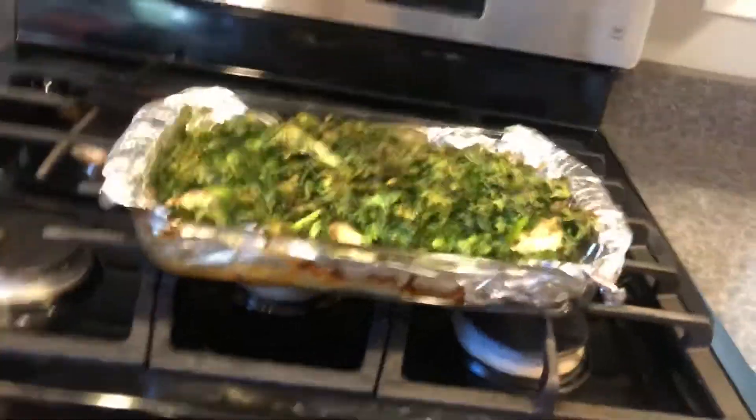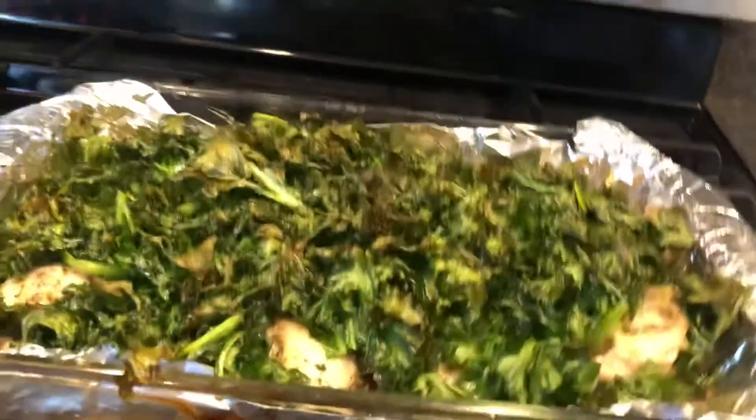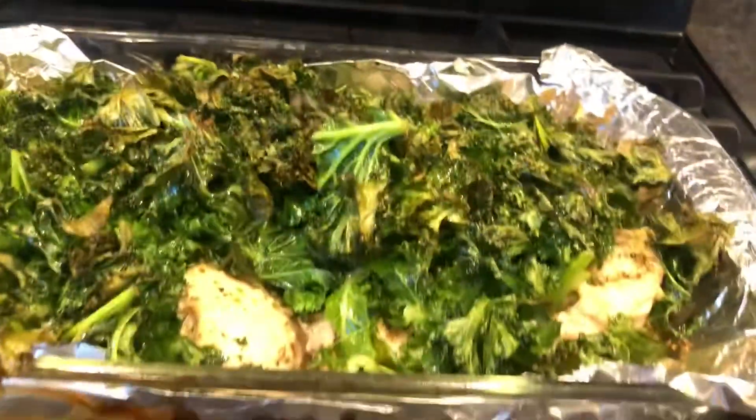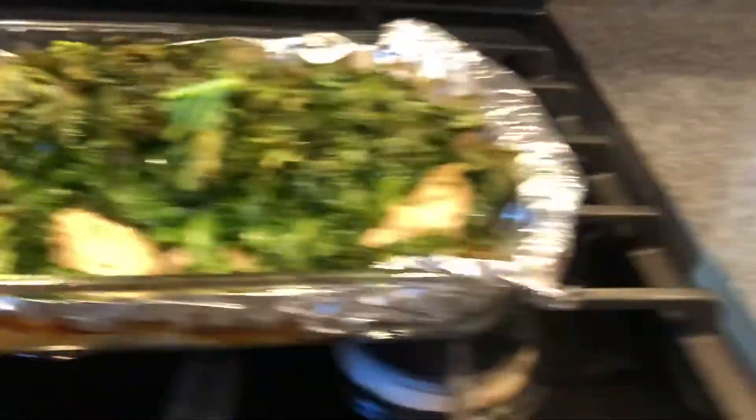Alright, dinner's out of the oven. I got some roasted kale on top of chicken thighs - you can't really see them but they're in there. They're full of garlic, oregano, salt, and pepper. Now we're moving over into my dining room.